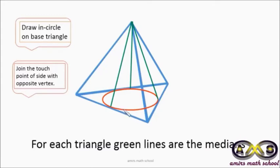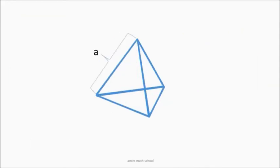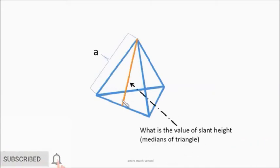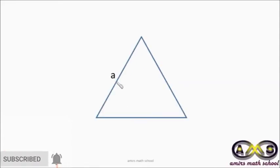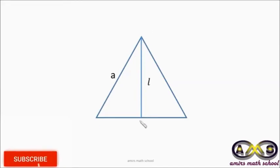The incircle touches the base triangle at three points, giving us three slant heights. Since all faces are equilateral triangles, each of these green lines is the median of the triangle. The medians are the slant heights of the tetrahedron. Now we are going to find the value of slant height when the edge length is given. Suppose the edge of the tetrahedron is 'a' — we want to find the length l, the median of the triangular face.